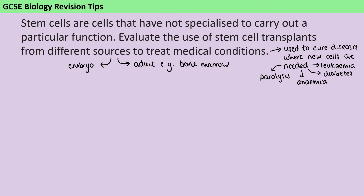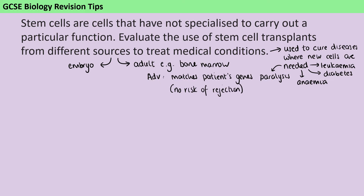The first big advantage of using adult stem cells is that, depending on the type of condition being treated, you may be able to use the patient's own stem cells. This won't be true for a genetic disorder, but it will be true if, for instance, someone has suffered an injury — if their spine has been severed, we may be able to grow them new tissue using their own stem cells. This is a big advantage because those stem cells have the exact same genetics as the patient, meaning there is no risk of rejection. That means the patient wouldn't need to take immunosuppressant drugs, which is important because suppressing the immune system massively increases the risk of infection with communicable diseases.